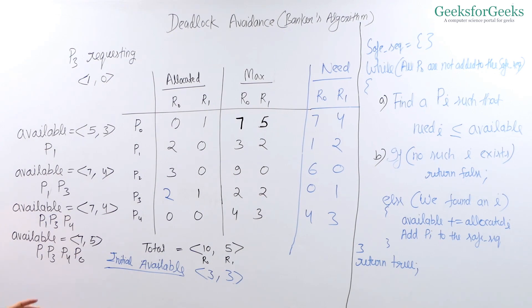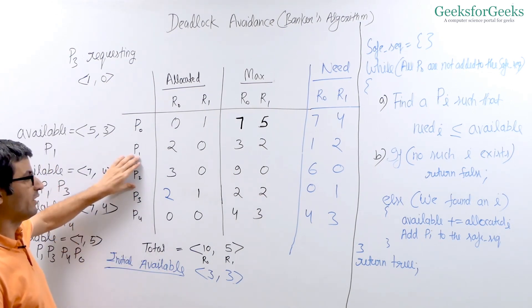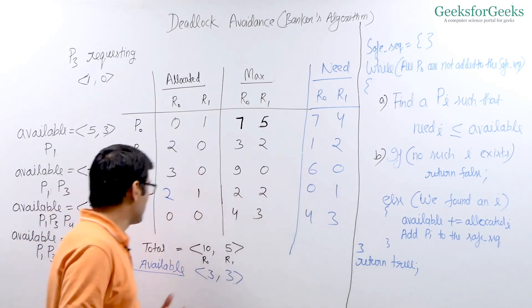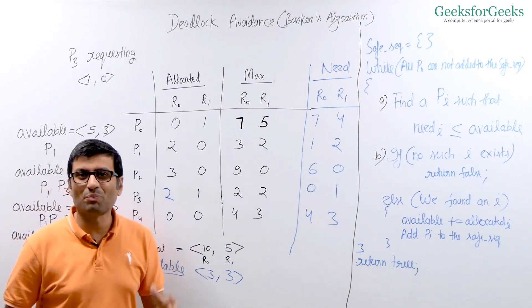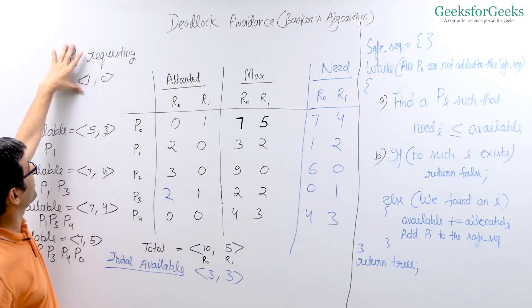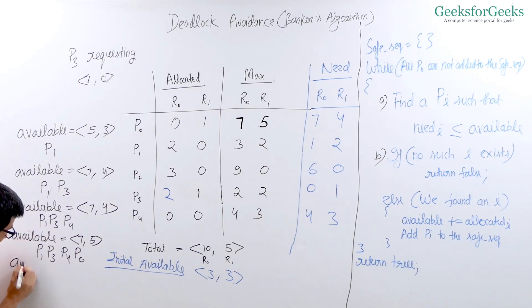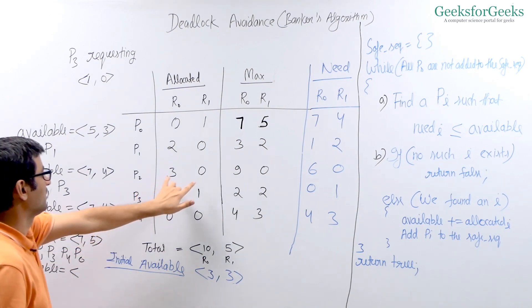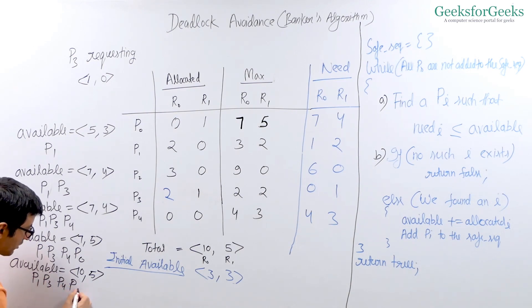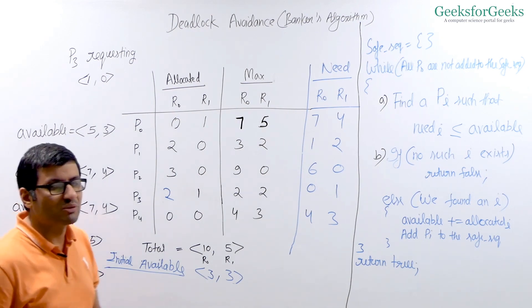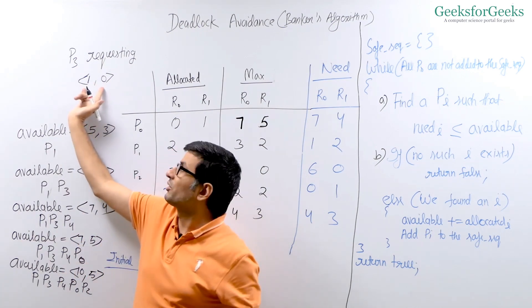We still don't have all processes in the safe sequence — only P2 is left. P2's need is (6, 0) and available is (7, 5) — P2 can be added to the safe sequence. So we got all processes in the safe sequence: P1, P3, P4, P0, P2. The final available becomes (3+0, 0+1+...+5) = (10, 5). Since we have a safe sequence, the request of (1, 0) from process P3 is granted.